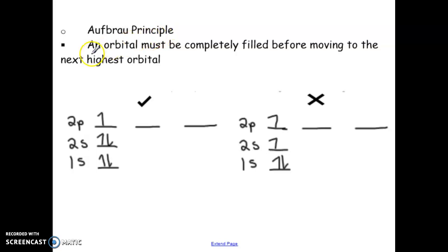So the Aufbau principle, an orbital must be completely filled before moving into the next highest orbital. So what this is really saying, not only the orbital, but the orbital level that you are working on. For example, all of the 1S must be filled to its maximum before moving into 2S. The 2S must be filled before moving into the 2P. So if you can see here, I have the 2S full, but 2S has only one electron, and the 2P already has another electron. This is an incorrect placement. I can only move into 2P once the 2S is completely filled.